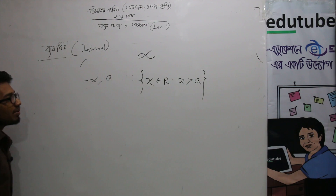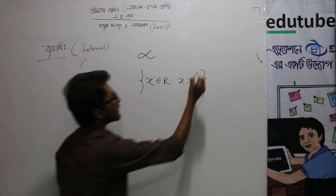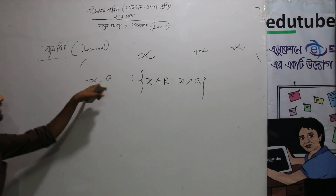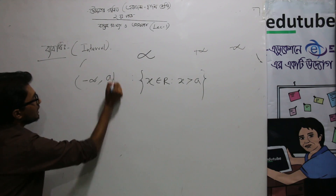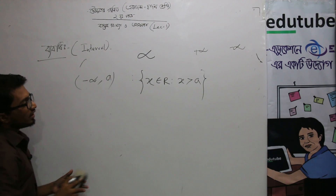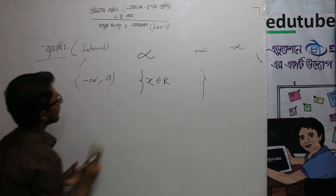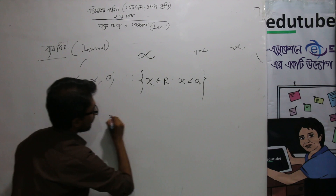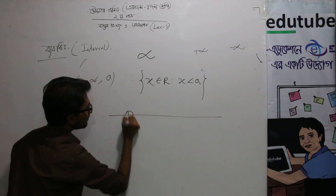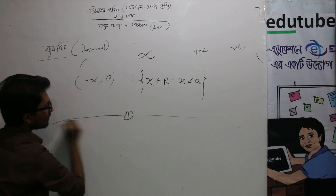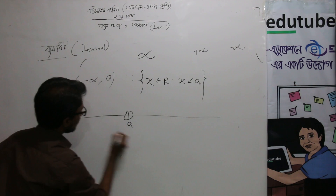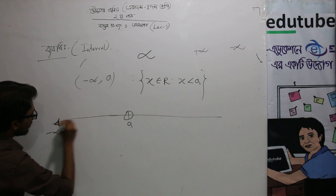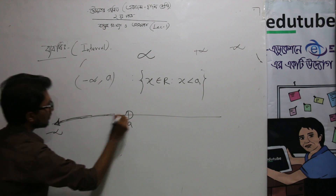Infinity of infinity — positive infinity and negative infinity. So, negative infinity a will give you a, so let's do x less than a. If this is a, it will be less than a, negative infinite, less than a.